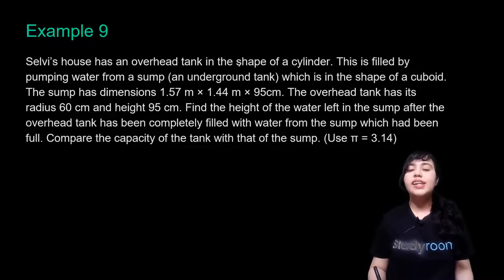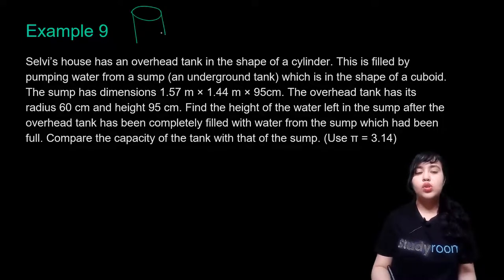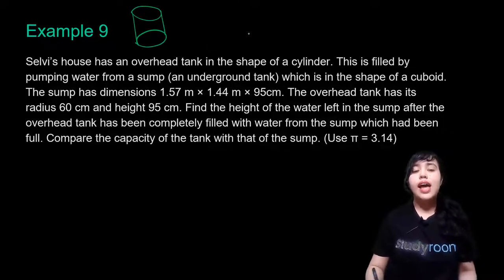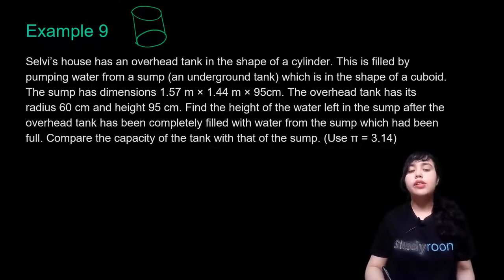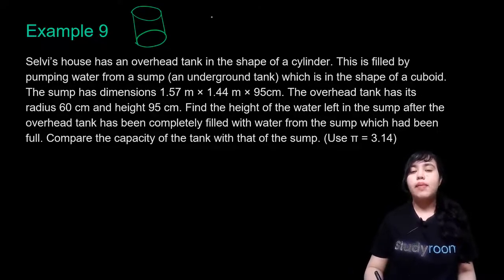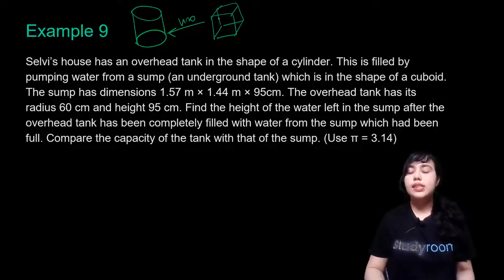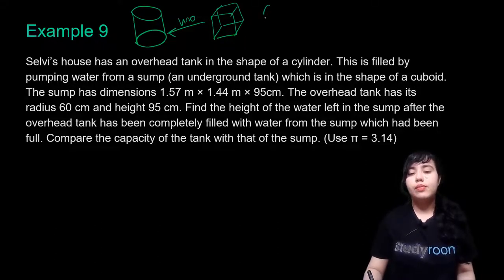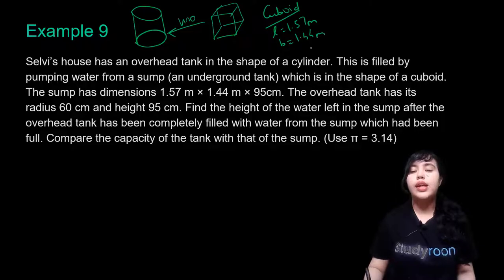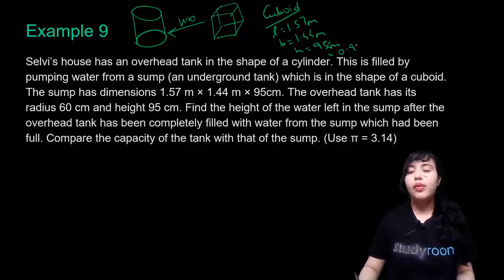We've been given an overhead tank in the shape of a cylinder. We are filling this tank with water from a sump — an underground tank in the shape of a cuboid. The cuboid has dimensions: L = 1.57 m, B = 1.44 m, and height = 95 cm, which we convert to 0.95 m using the fact that 1 m = 100 cm.